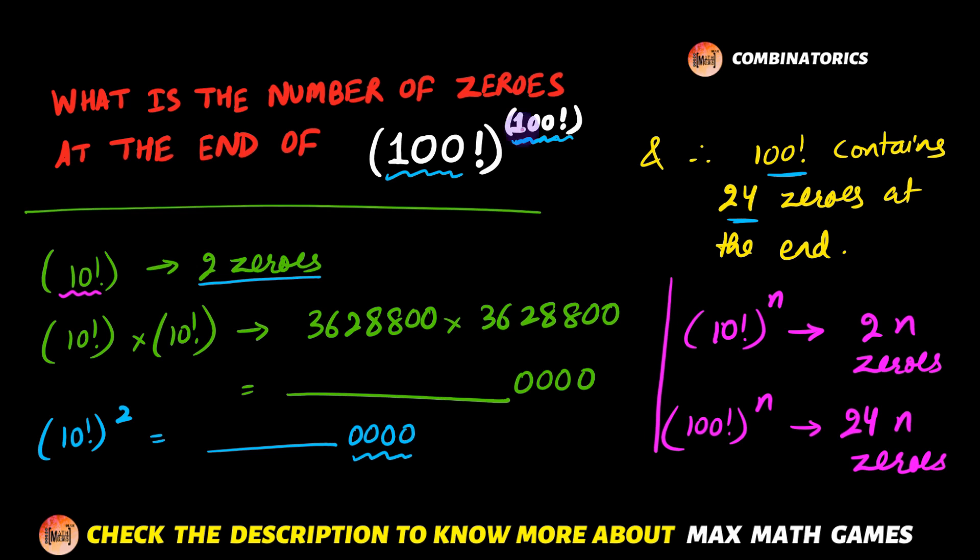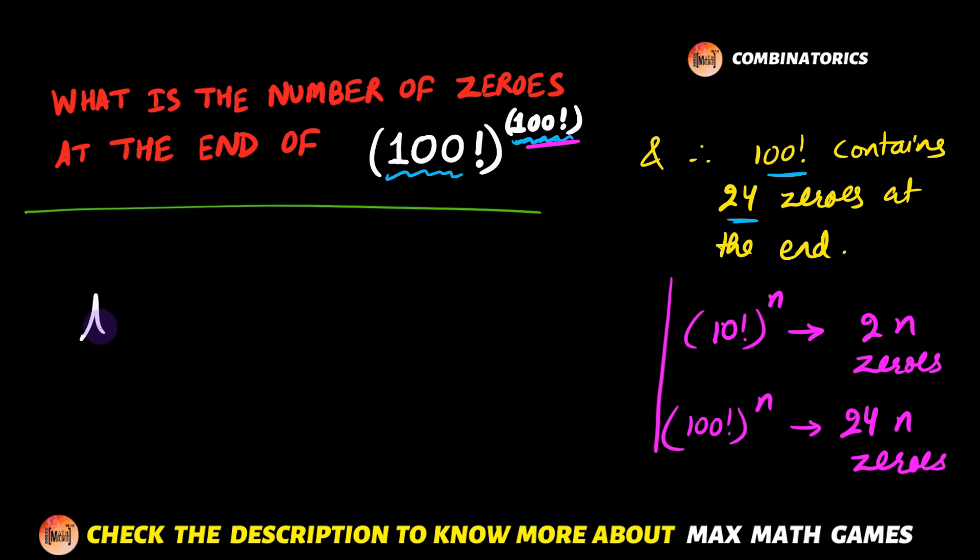So do not get confused by this power of 100 factorial. And the answer for this question is going to be 24 times the power, that is 24 × 100!. Let me know in the comments if you have gotten the correct answer. I hope you have understood everything taught in this video. Thank you.